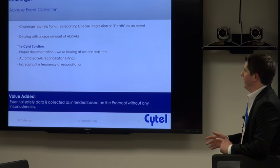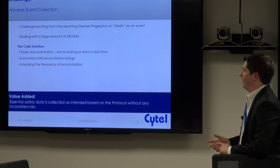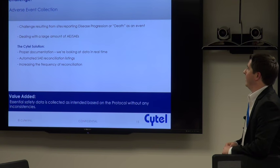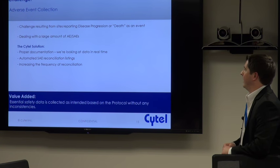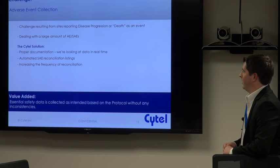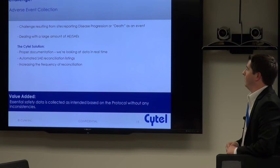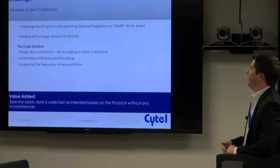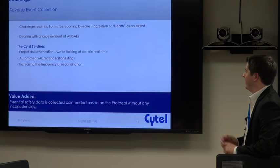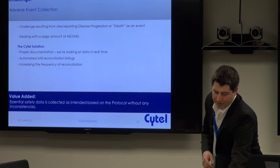When you have a large volume of SAEs, automated SAE reconciliation listings are obviously a wise idea. We utilize SAS for some of our SAE reconciliations, and you may also want to consider increasing the frequency of those reconciliations. On other trials you may only do it monthly, but if you have a lot of serious adverse events coming in, you may want to think about doing it every two weeks. The value added is that this essential safety data is collected as expected based on the protocol.